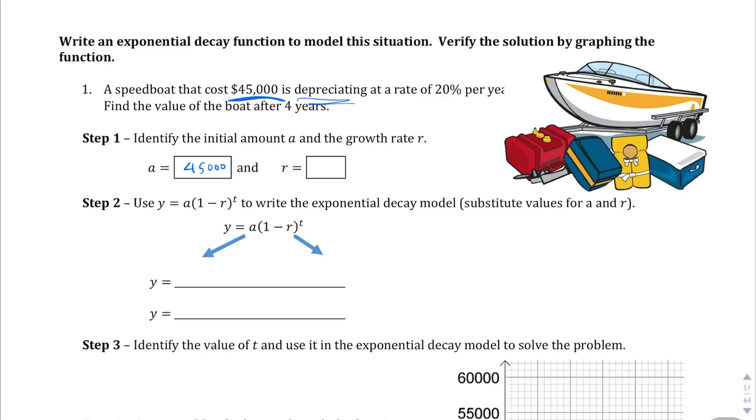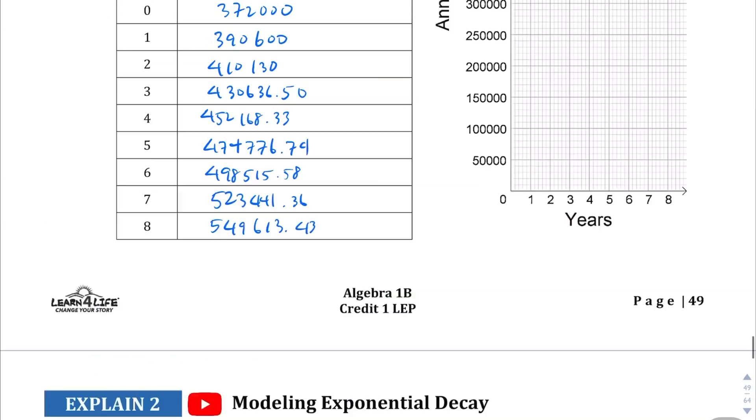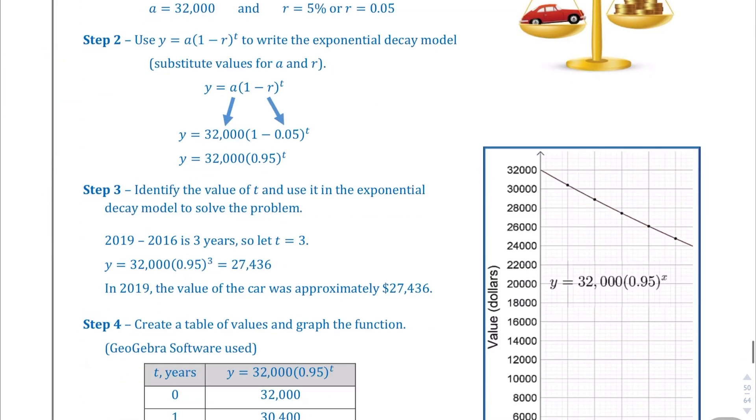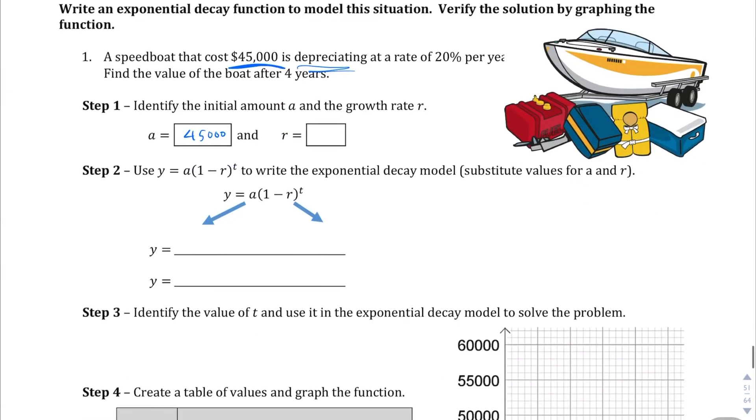Find the value of the boat after four years. So the initial value was $45,000. And it just occurred to me we kind of didn't solve the previous problem. What they wanted to know after eight years, the answer was right here, $549,613. Sorry. We're jumping back and forth. But back on this question here on page 51, the initial value is $45,000. The rate of decay is 20% per year. So 20% as a decimal is 0.2.